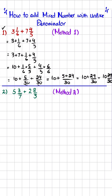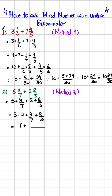Now we will solve the second question using the second method. So I will write this mixed fraction as 5 plus 3/7 plus 2 plus 8/3. Rearranging gives us 5 plus 2 plus 3/7 plus 8/3. This gives us 7 plus, and if you take the LCM of 7 and 3, that will be equal to 21.